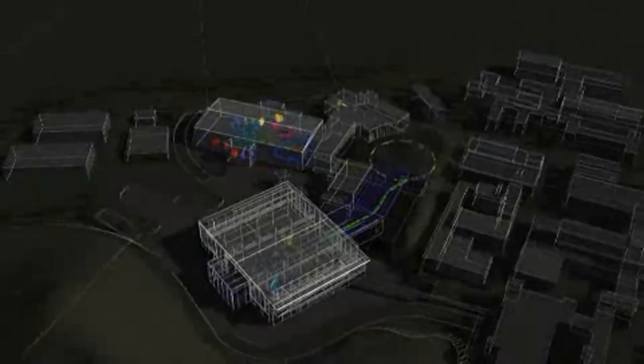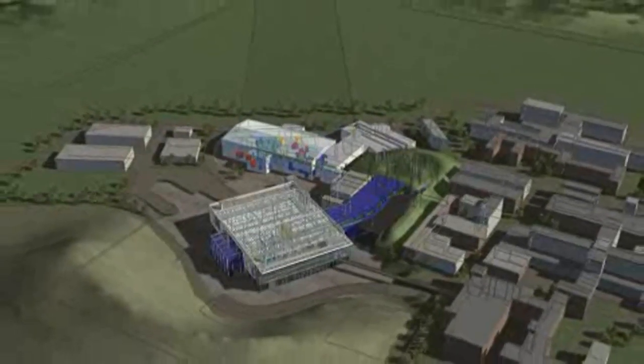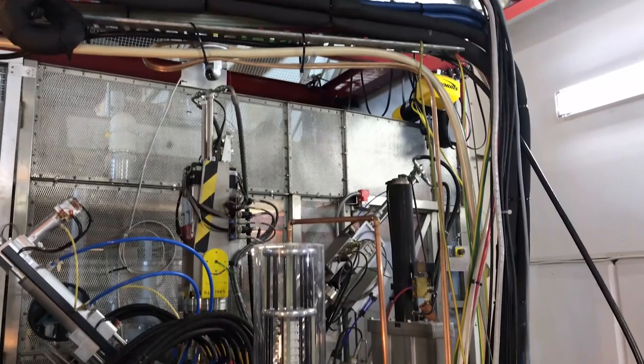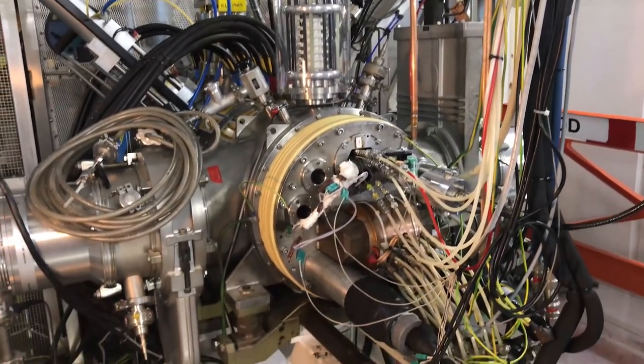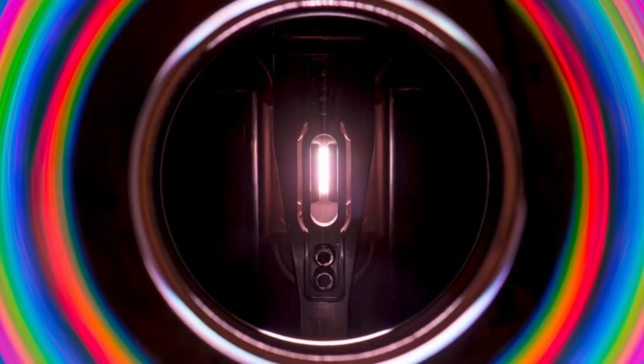Basically the entire accelerator, the entire particle beam that we're sending, comes from a bottle of hydrogen. To turn that hydrogen into a particle beam, you need a massive amplifier, a big piece of equipment to turn that into a plasma. That's the trick really.